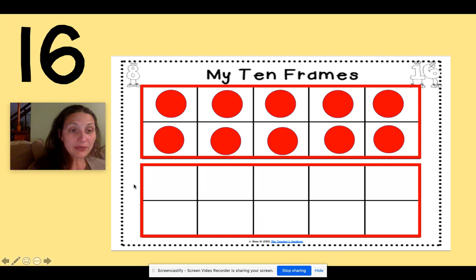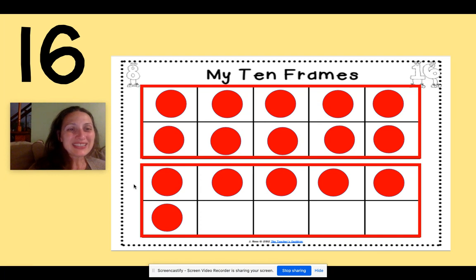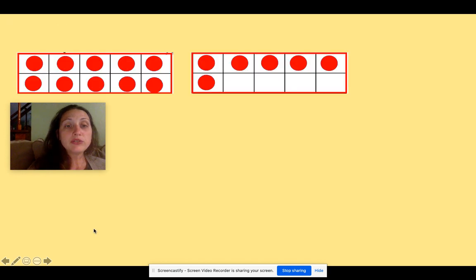But I'm not done counting. Here we go. Now, 11, 12, 13, 14, 15, 16. This is what the number 16 looks like. One full tens frame and another tens frame with some counters in it. So it's one full tens frame and one more tens frame with some counters in it.